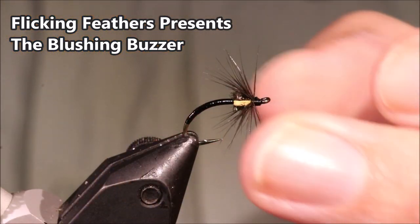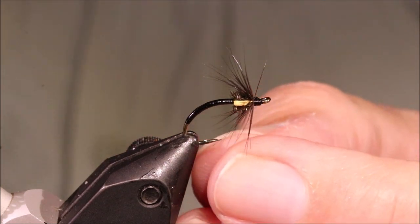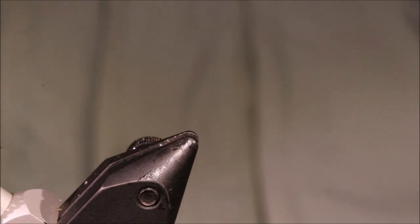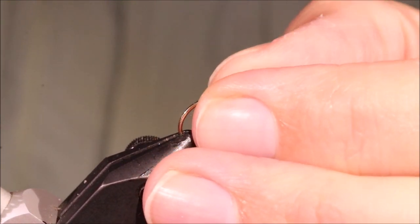Hi everybody, Martin at Flick and Feathers again today. I'm tying a fantastic little buzzer, part of this is Stan Hedley's blushing buzzer. Very effective. You could fish it like a wet fly or swing it like a buzzer, like an imph. Well worth tying some of these up if you fish still waters.